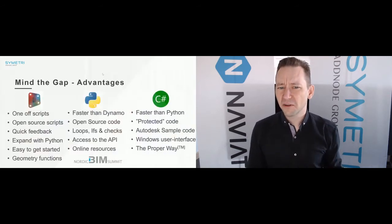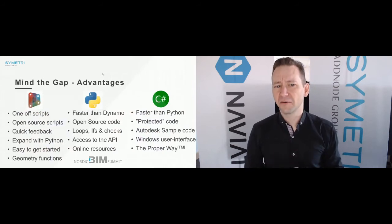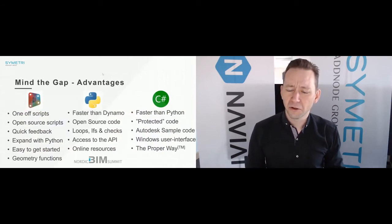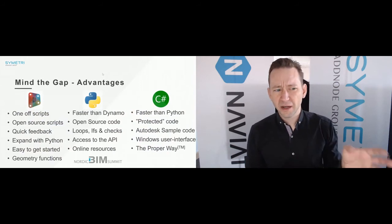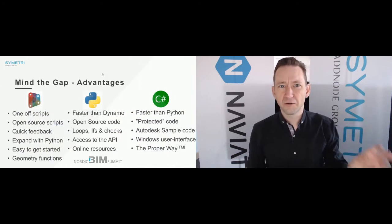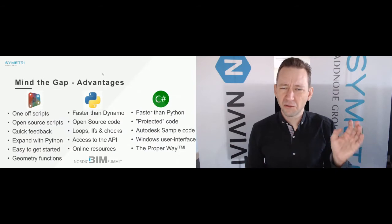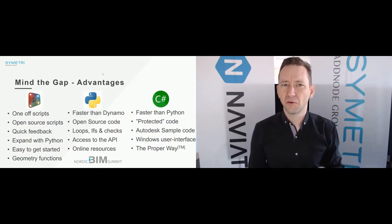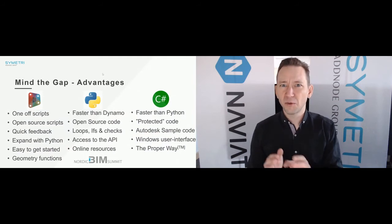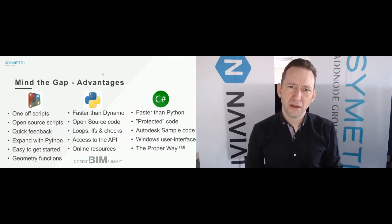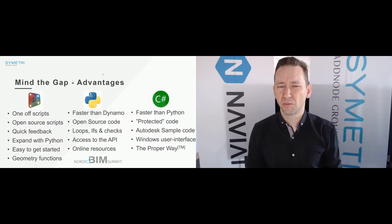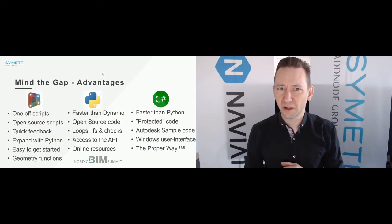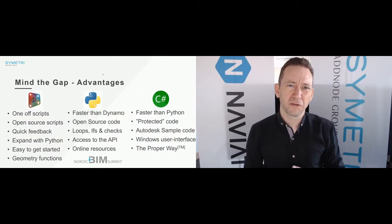There are several advantages and disadvantages between choosing which method to use. Dynamo is really great for one-off things — just doing a script, getting it running, and that's it. Copying areas: you have it running in two minutes. It's really fun because you have quick feedback — you can play around with your nodes and cables and see what happens. And there are useful geometry functions around it.